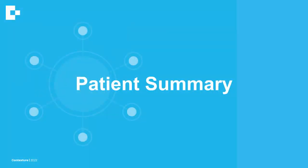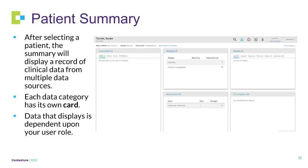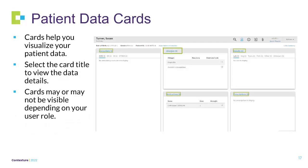In this section, we will review the patient summary. After selecting a patient, the summary will display a record of clinical data from multiple data sources. Each data category has its own card. Data that displays is dependent upon your user role. Cards help to visualize patient data. Select the card title to view the card details. Cards may or may not be visible depending on your user role — for example, health plan users will only have access to 36 months of data.